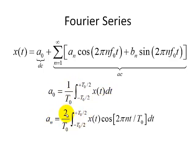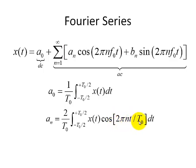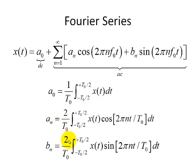An is defined as 2 over T0, and we integrate over one period — from minus T0/2 to plus T0/2, though it can be over any full period. Inside the integral, we have x of t multiplied by cosine of 2π n t divided by T0, where 1 over T0 is simply the fundamental frequency f0, and we integrate with respect to time. This equation shows how similar x(t) is to the various cosine functions at the fundamental frequency and its harmonics. The same process applies for Bn with the sine functions.